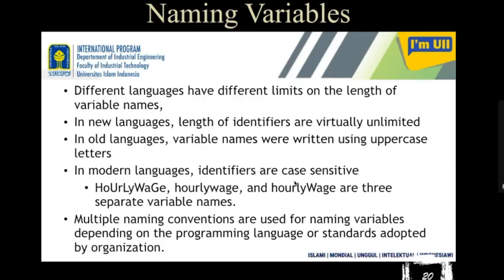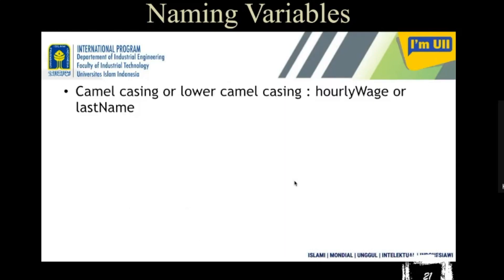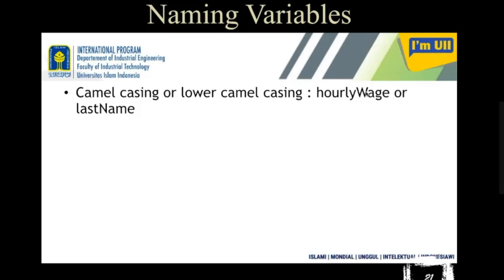Multiple naming conventions are used for naming variables depending on the programming language. One is camel casing, or lower camel casing. In lower camel casing, the first alphabet of the first word is lowercase, and the first alphabet of each remaining word is uppercase. For example, 'hourlyWage' consists of two words — 'hourly' and 'wage' — where 'h' is lowercase and 'W' is uppercase. Similarly, 'lastName' has 'l' lowercase and 'N' uppercase.